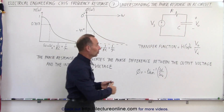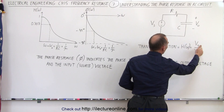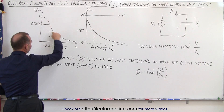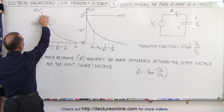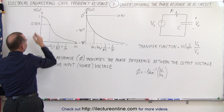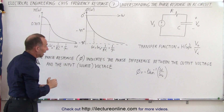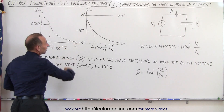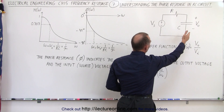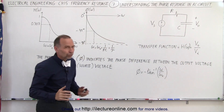The transfer function is simply the ratio of the magnitude of the output voltage over the input voltage. The transfer function will look something like this — maximum transfer when the frequency is zero, meaning the output equals the input voltage in magnitude. When the frequency goes to infinity, the output voltage diminishes to zero, giving a zero relationship between output and input voltage magnitude.